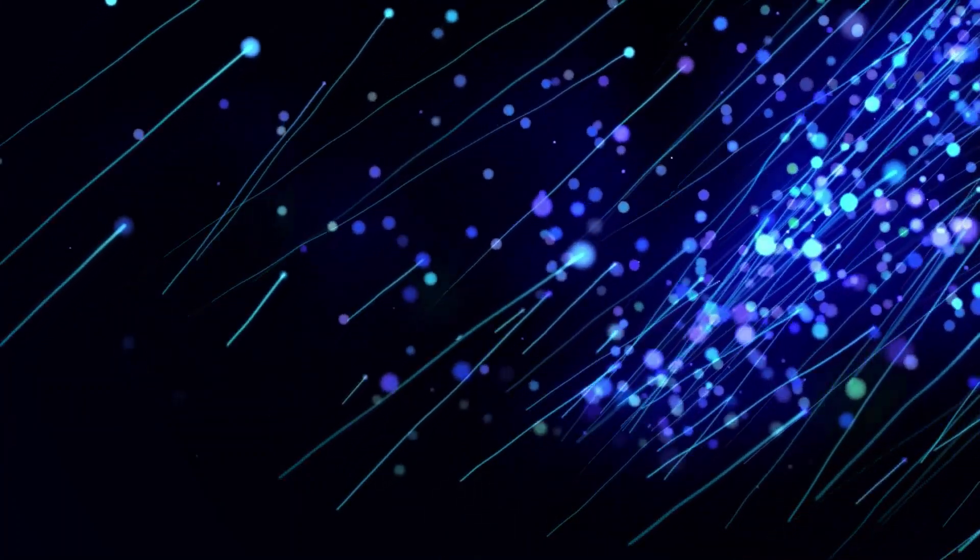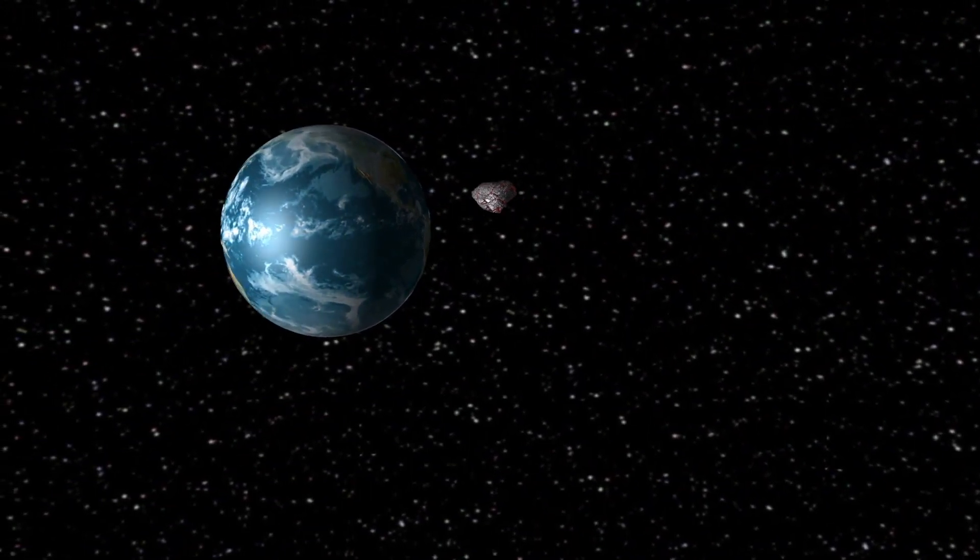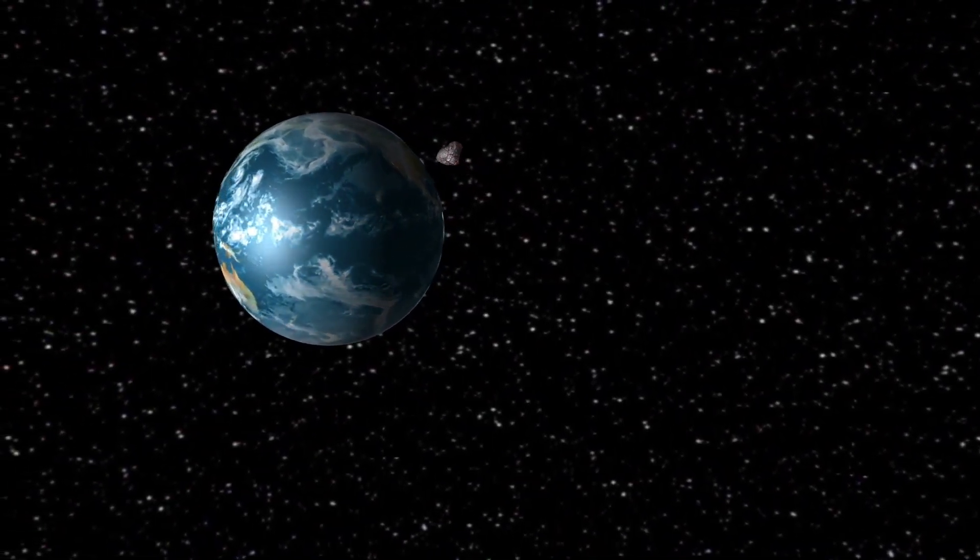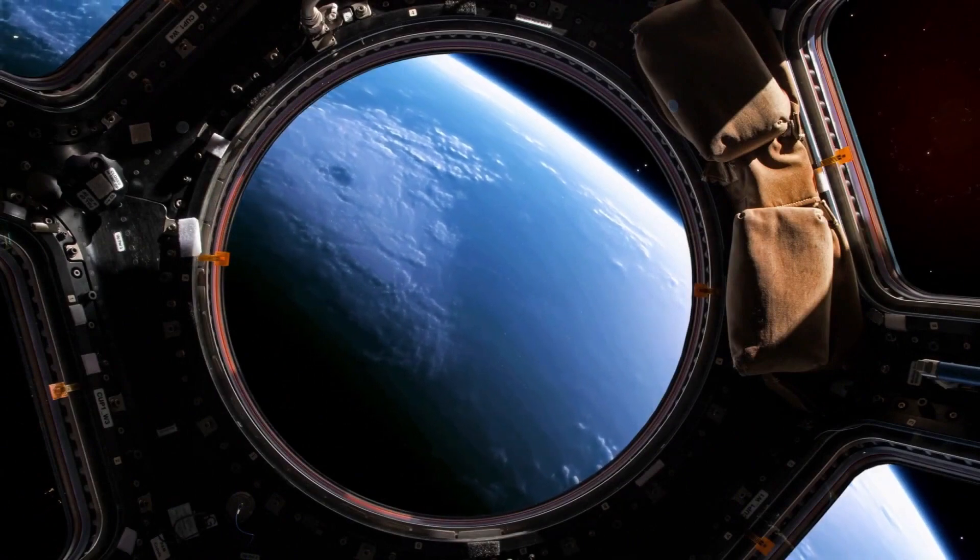Therefore, larger exoplanets that are on short orbital periods, closer to their stars than Mercury is to the Sun, some much, much closer, on orbits of less than one Earth week, are favored in the data.